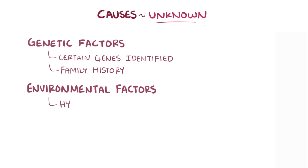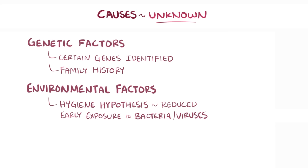For environmental factors, there's the hygiene hypothesis, which suggests that reduced early immune system exposure to bacteria and viruses might actually increase the risk of later developing asthma, possibly by altering the overall proportion of immune cell subtypes.